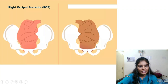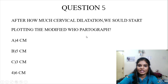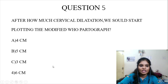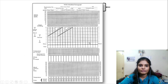Question number 5: After how much cervical dilatation should we start plotting the modified WHO partograph? Options: 4 cm, 5 cm, 3 cm, or 6 cm. The partograph is a graphical representation of all events of labour — maternal condition, fetal condition, and progress of labour, all in relation to time. Let us have a quick revision about the modified WHO partograph.